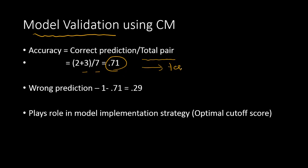We always compute accuracy on the test dataset, because the training dataset is likely to give good numbers anyway. What we want is for the test dataset to also give a good accuracy percentage — otherwise it's not a good model. The accuracy rate should be greater than 0.5, because if it is less than that, you are doing no better than randomly tossing a coin to classify customers.